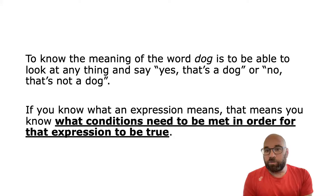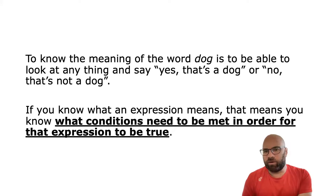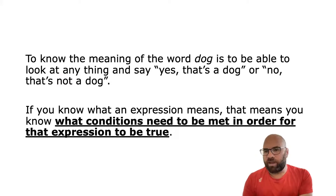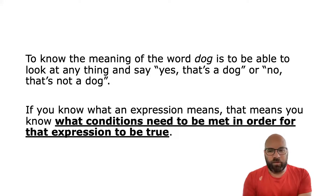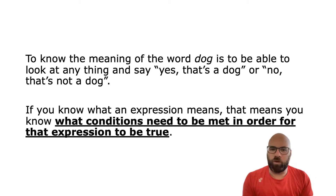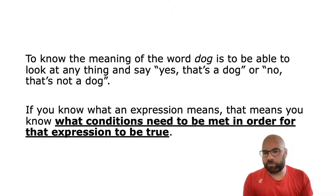So this is the notion called truth conditions. What that means is to know the meaning of a word like dog, or any other word, or any sentence or phrase, it means you can look at something and you can say yes, that's a dog, or no, that's not a dog. The concept in semantics is that to know what an expression means, that means you know what conditions have to be met for that expression to be true.